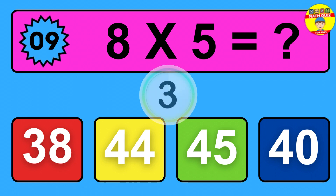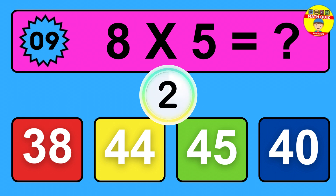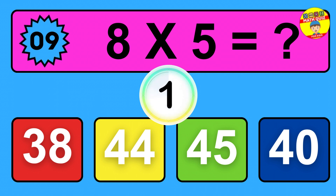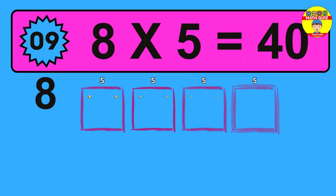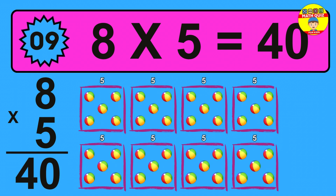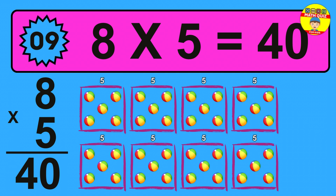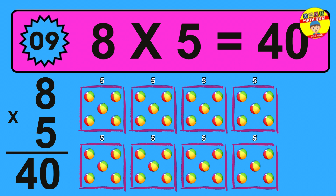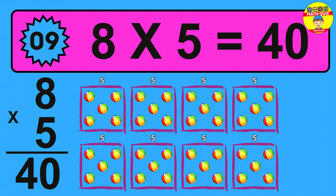Question 9: 8 times 5 equals what? The answer is 8 times 5 is 40. To calculate, we have 8 groups with 5 balls each one. So how many balls do we have? 40 balls.